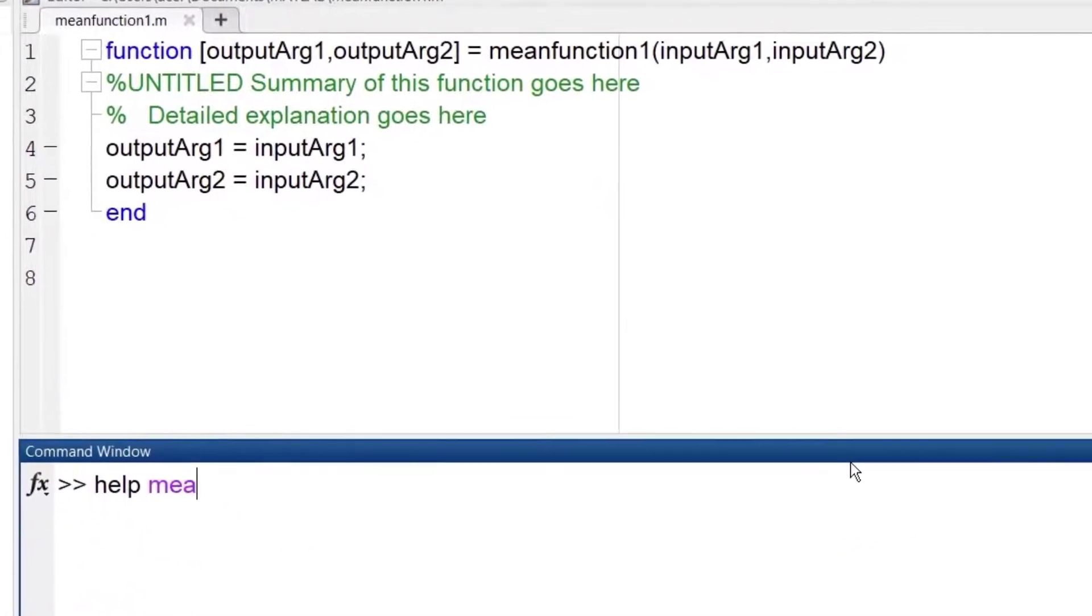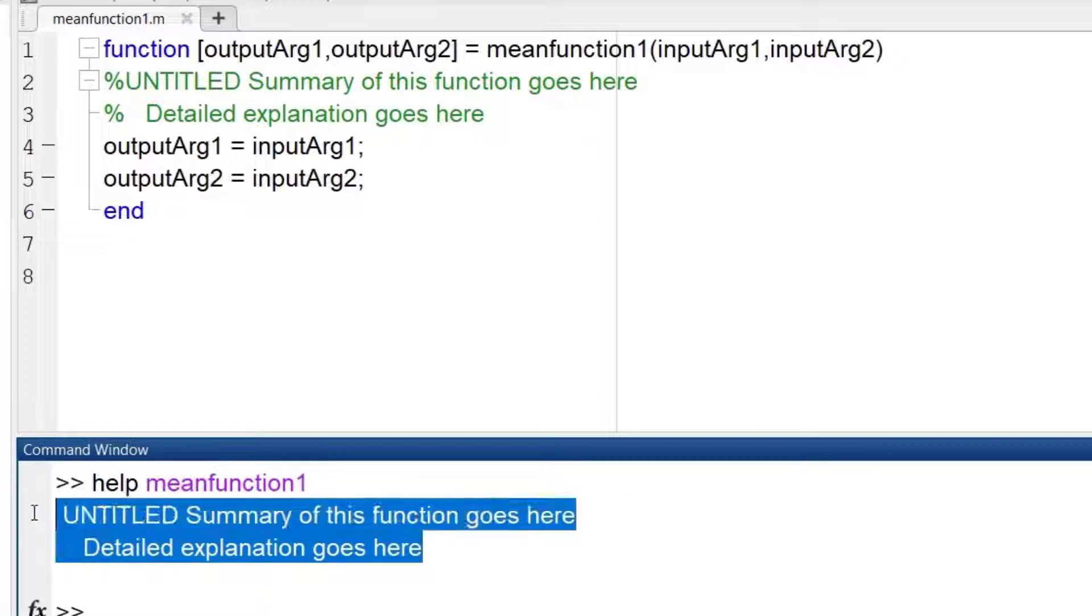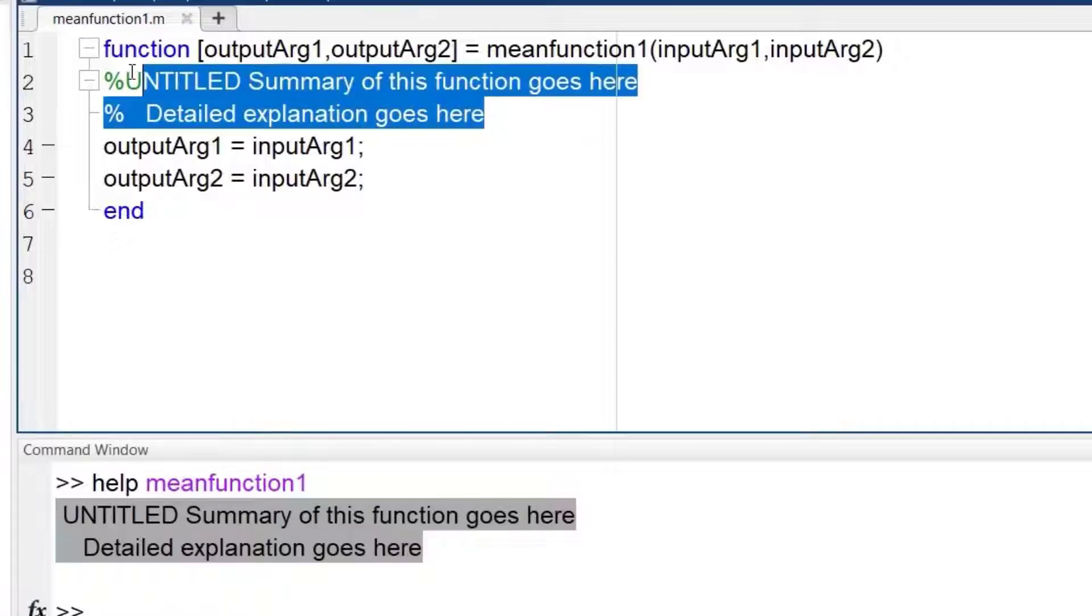Before we go any further, in the command window I type 'help meanfunction1'. You can see that the comment lines at the beginning of the function are displayed as a guide, so use this option brilliantly.